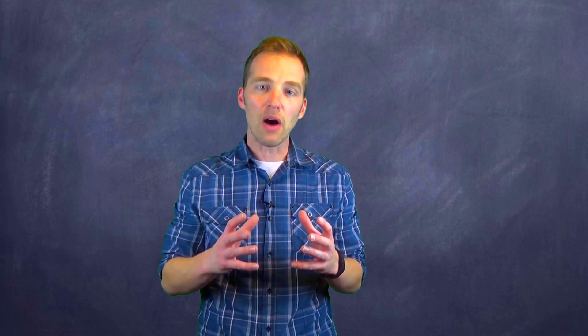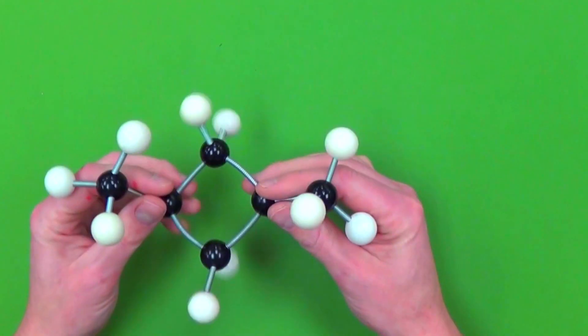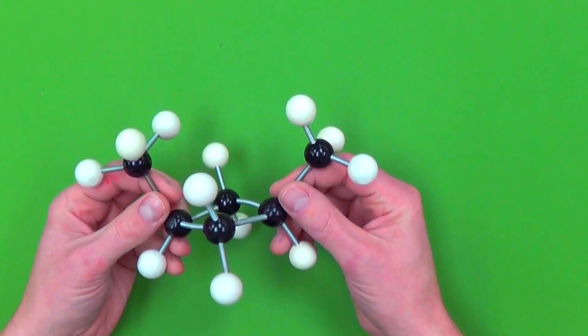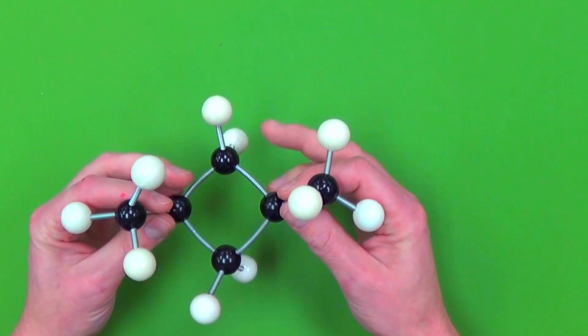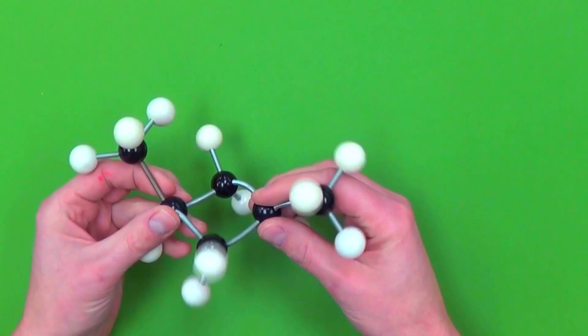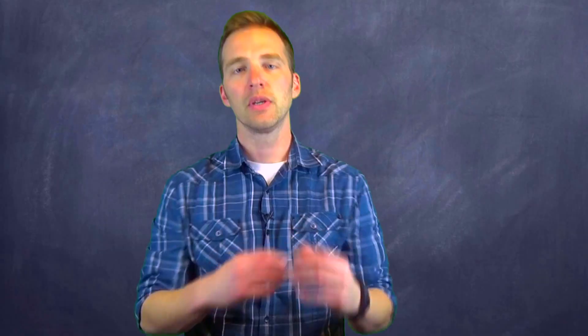So while double bonds can restrict the movement of a molecule that are going to give us those cis and trans isomers, it also is possible for these cycloalkanes, or ring structures, to be present that prevent the movement of those molecules as well. So if we take a look at an example like this, we can see that this cyclobutene ring structure prevents these side groups from rotating back in the other orientation.